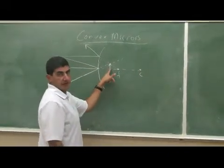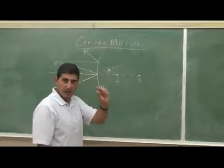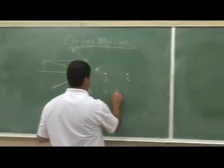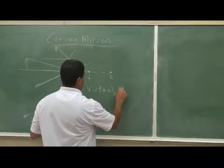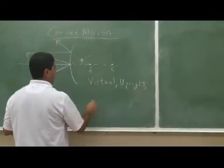It's always going to be a real image. Sorry, it's always going to be a virtual image, but it's going to be upright and it's going to be smaller. So virtual, upright, and diminished.